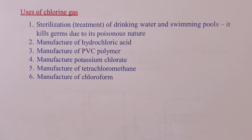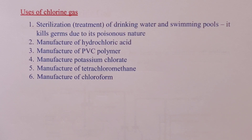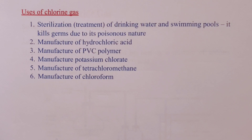Chlorine is used in swimming pools to kill germs because it is poisonous. Chlorine is also used to manufacture hydrochloric acid. We get PVC — polyvinyl chloride polymer or polychloroethene — from chlorine. Chlorine is also used to manufacture potassium chlorate, tetrachloromethane, and chloroform.